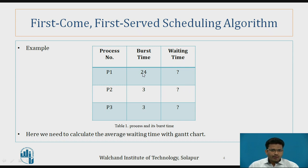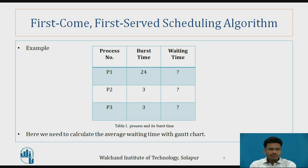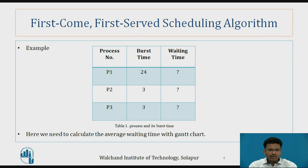P1 has a burst time of 24. Burst time is nothing but the total time required for the completion of that process — meaning P1 is going to use 24 milliseconds of the CPU. Then P2 needs 3 milliseconds, and P3 needs 3 milliseconds.